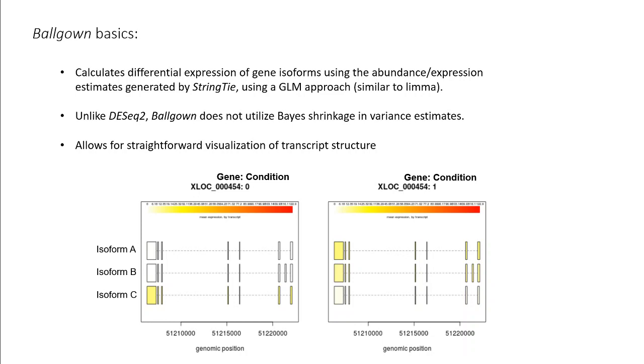Here you can see, for a given gene, the three detected isoforms with the color scale indicating relative abundance between two different experimental conditions. As you can see, isoforms A and B increase in abundance between the two conditions, while isoform C decreases in abundance.